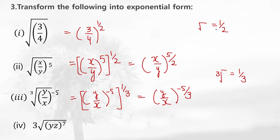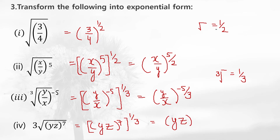Now look at the next one — there is a cube root here. You write the radicand as it is, and the cube root is written as the power 1 by 3. For the one with the 9th root, you write the number 27 as it is, and the 9th root converts to the power 1 by 9. That's it.